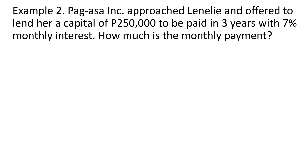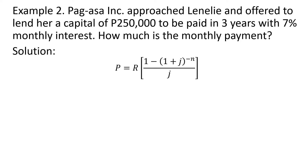Example 2: Pag-Asa Incorporated approached Lenely and offered to lend her a capital of P250,000 to be paid in three years with 7% monthly interest. How much is the monthly payment? The formula we are going to use is: P equals R times the quantity (1 minus (1 plus J) raised to the negative N) over J.